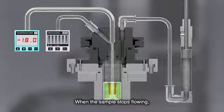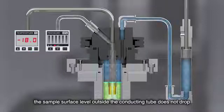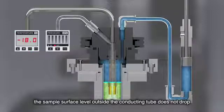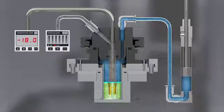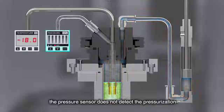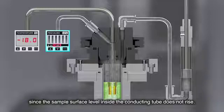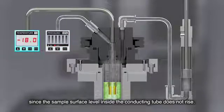When the sample stops flowing, the sample surface level outside the conducting tube does not drop even when pressurized. At the same time, the pressure sensor does not detect the pressurization, since the sample surface level inside the conducting tube does not rise.